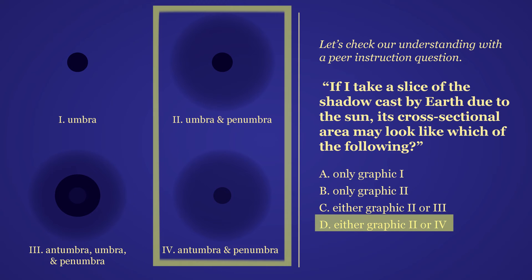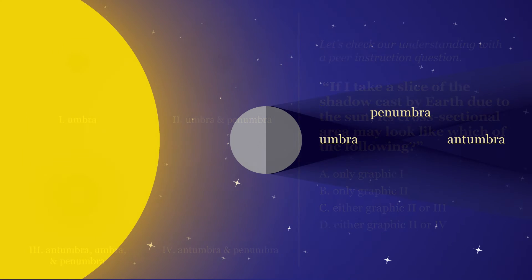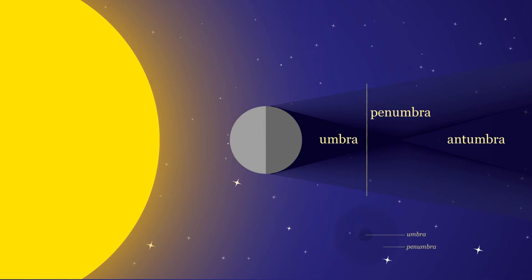The sun acts as an extended source, so we'll never see just the umbra. It is possible to take a slice of the shadow near Earth that has the umbra and penumbra, or farther from the Earth that has the penumbra and antumbra.